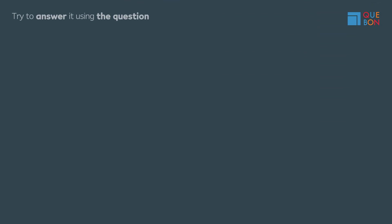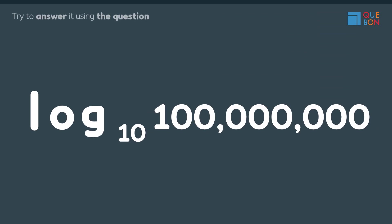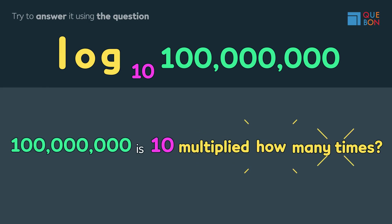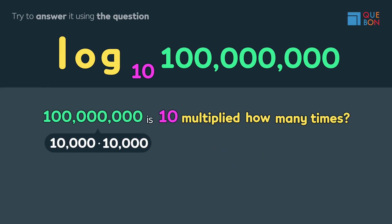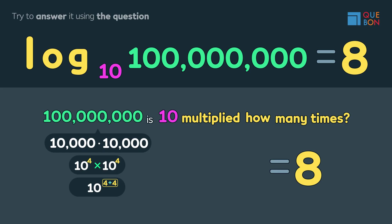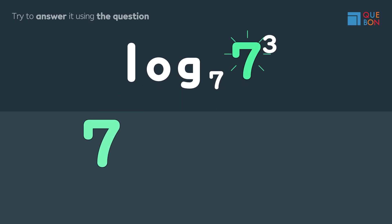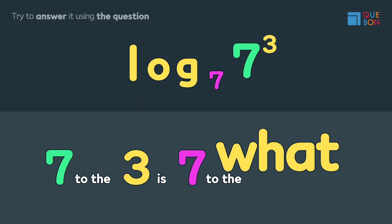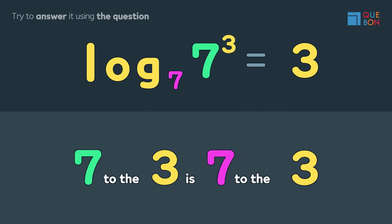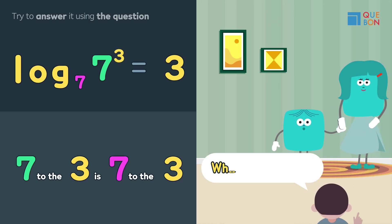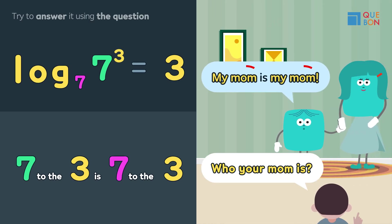Let's try the other way around: log base ten of one hundred million. One hundred million is ten multiplied by itself how many times? Eight. Here's a very easy question: what is log base seven of seven to the third power? Seven to the third is seven to the what power? It's three — it's like asking who your mom is. My mom is my mom.